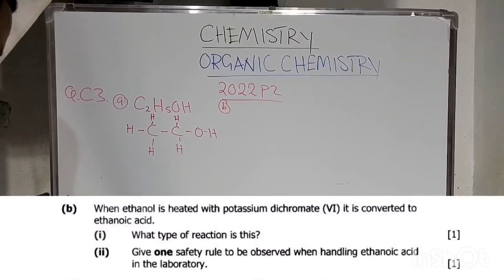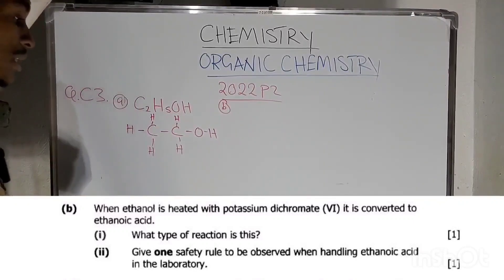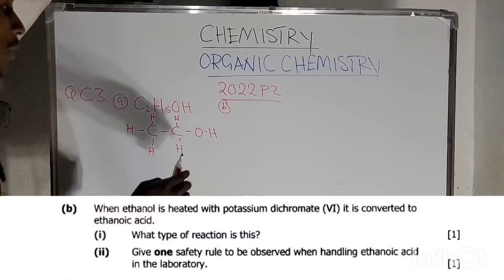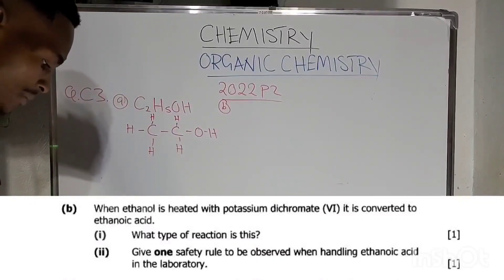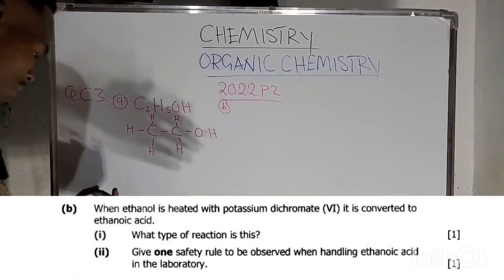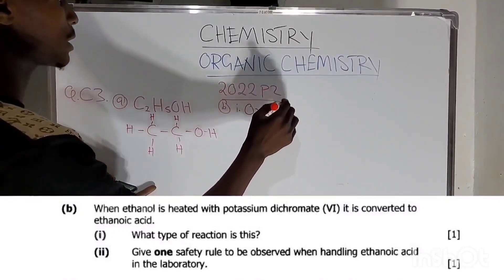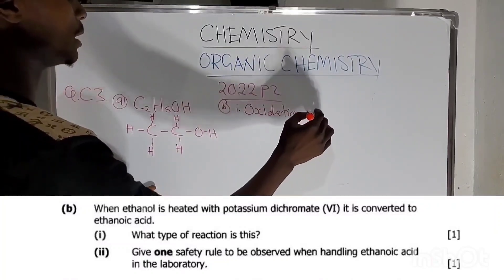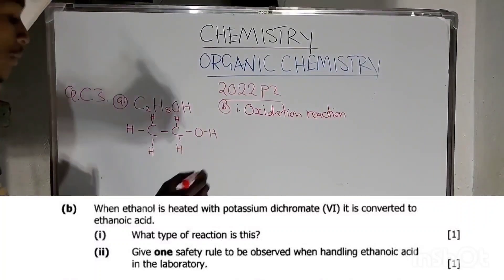Question B: When ethanol is heated with potassium dichromate, it is converted to ethanoic acid. Ethanol undergoes oxidation — using potassium dichromate you also form ethanoic acid. So the type of reaction is an oxidation reaction.